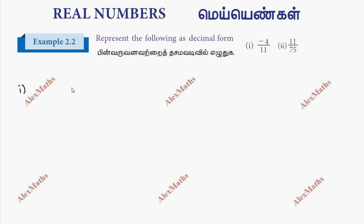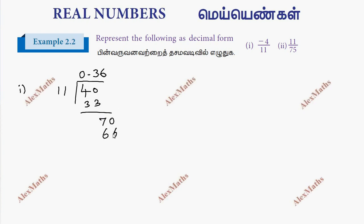So, minus 4 divided by 11. This is divisible, so this is equal to 0. So this is 3 times, balance is 7. If we have 0, 6 times, this is 66. Again, balance is 4. If we have 0, so 3 times, 33 — balance is 7.